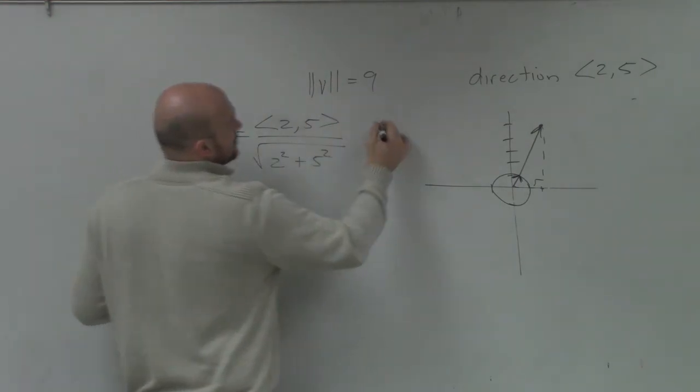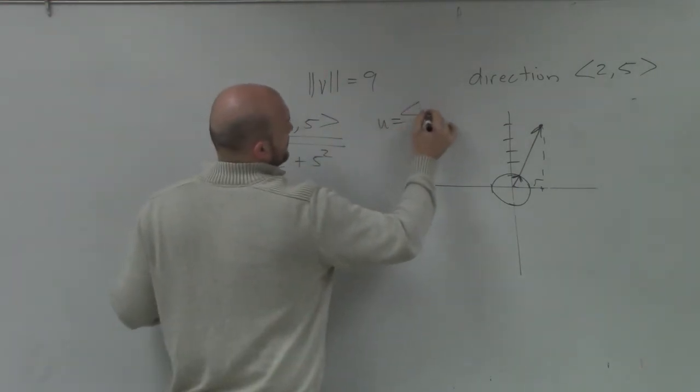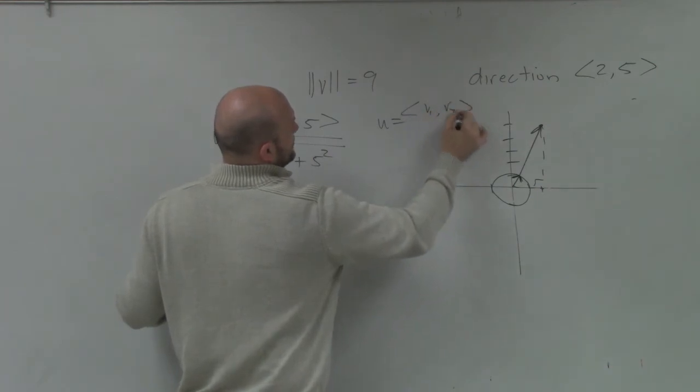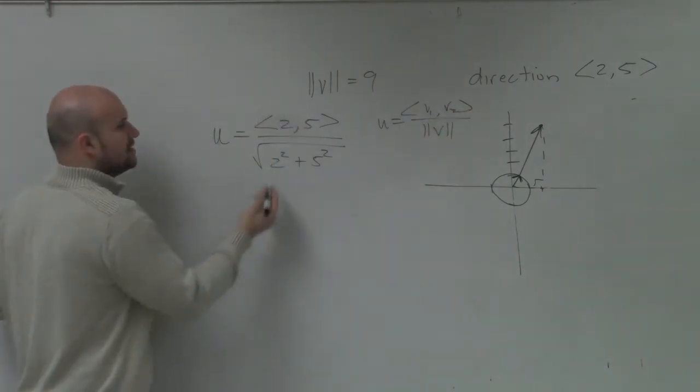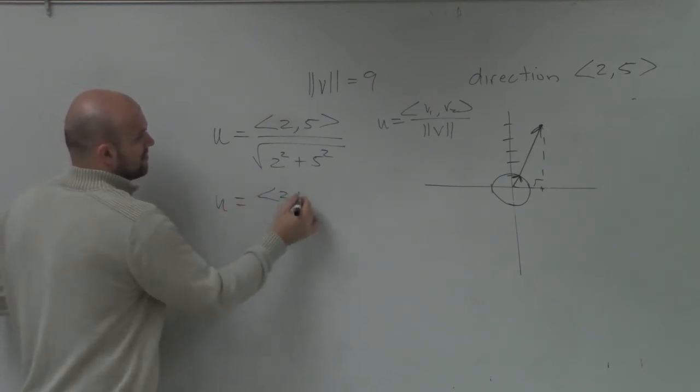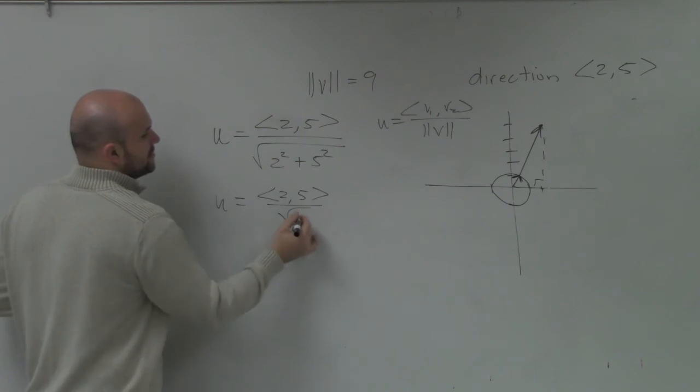Magnitude u equals v1 comma v2 over the magnitude of v, right? That's what we're doing here. So that's going to be 4 plus 25, so u equals 2 comma 5 divided by the square root of 29.